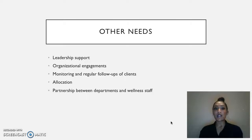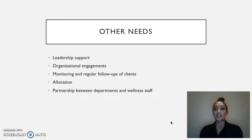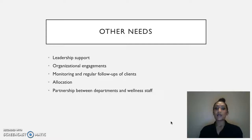Along with these recommendations, there are still other needs to address on a bigger scale to make a bigger change. Those three recommendations help this group on a more personal level, but to really help this community as a whole, there's even more to be done. For example, there is a huge importance of leadership support, organizational engagement, monitoring and follow-ups of clients, and allocation and partnership between departments and wellness staff — such as coming together to create healthier snacks in vending machines or in the cafeteria. The community and especially community professionals really need to come together to make an even bigger change.